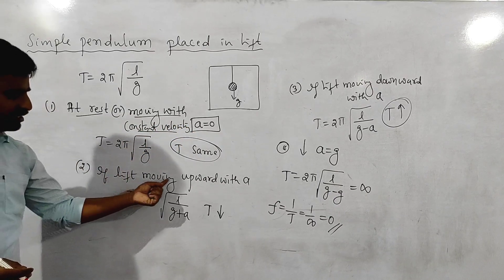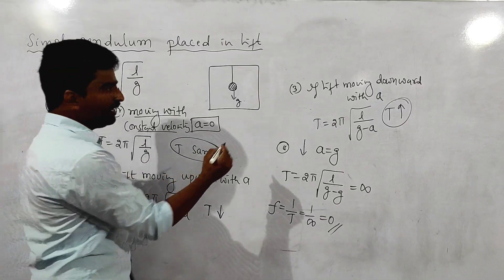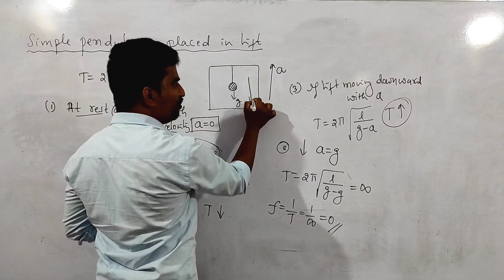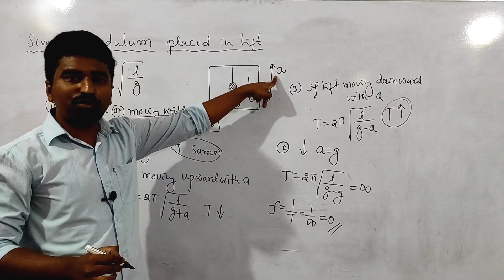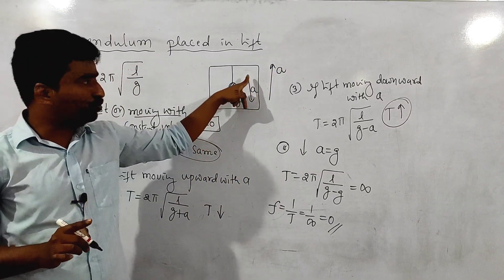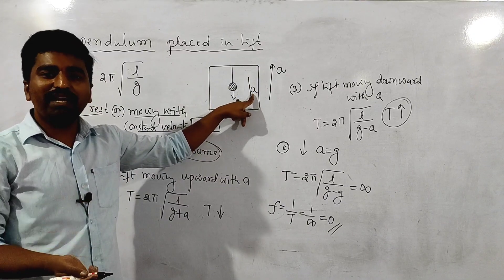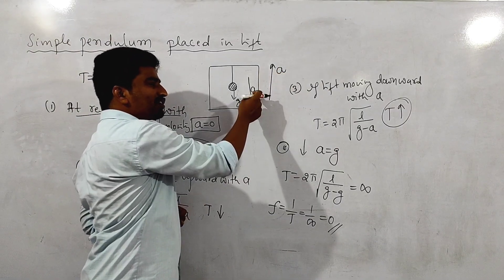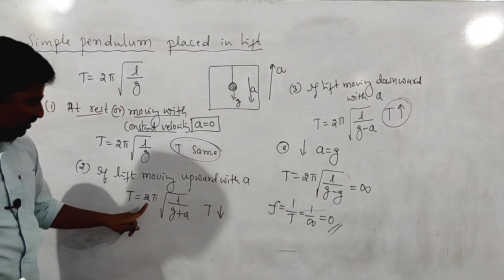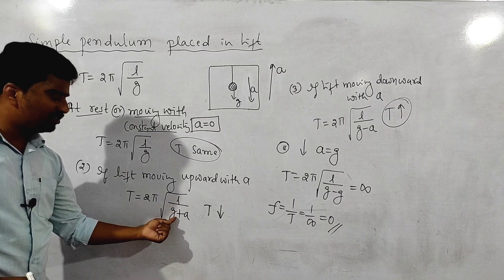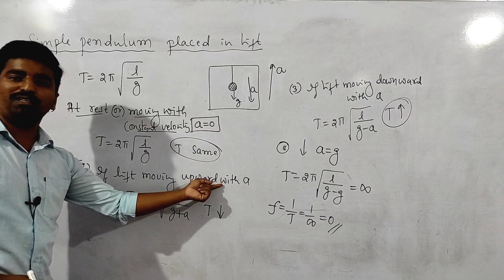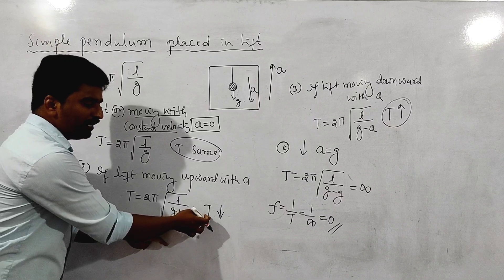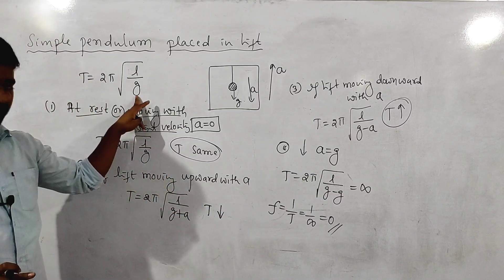Second case: if the lift is moving upward with acceleration a, a pseudo force acts downward. The effective gravity becomes G + a. So the time period T = 2π√(L/(G+a)). Since G_eff increases, the time period decreases compared to the initial value.